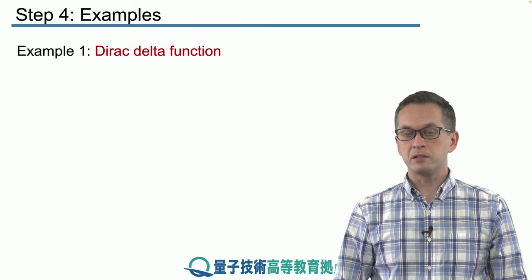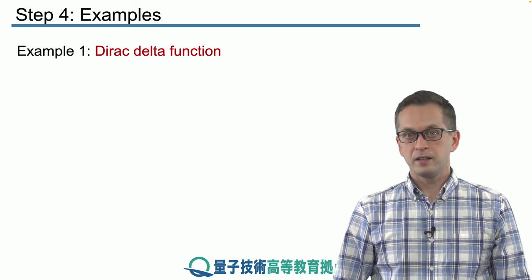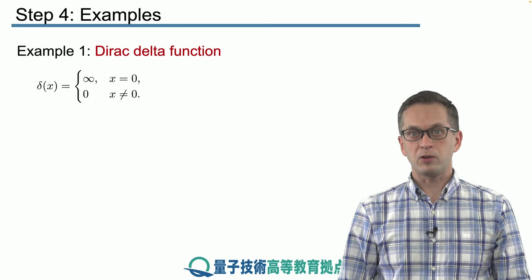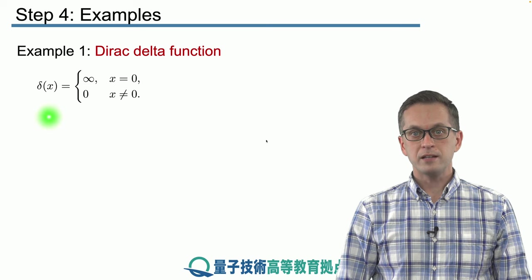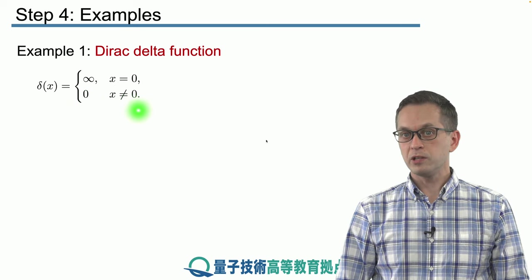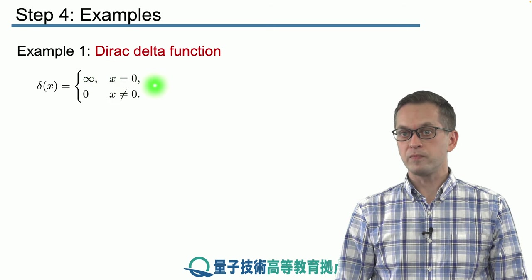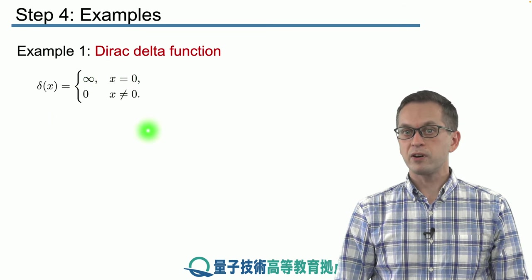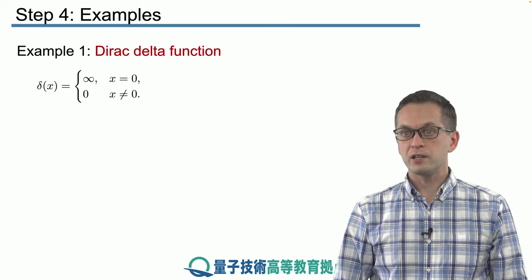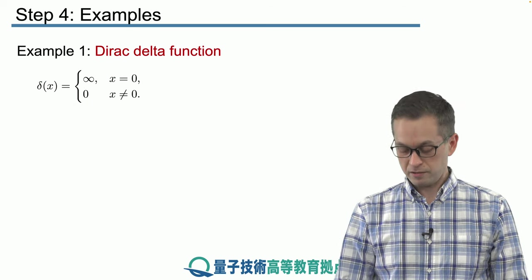Our first example is a Dirac delta function. This function is defined as follows: δ(x) is equal to 0 when x is not equal to 0 and positive infinity when x is equal to 0. So this is a very peculiar function but it's very useful in physics, engineering, mathematics.